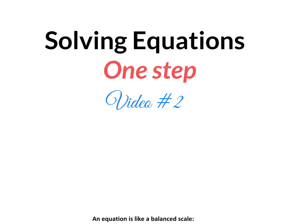Here's video number two on solving equations, a review for students that are behind. On the last video we had something like x plus 2 equals 5, and the way to get rid of the addition is to apply subtraction — the inverse operation — and what you do to one side you do to the other. The answer was x equals 3. On this video we're talking about getting rid of multiplication and division.